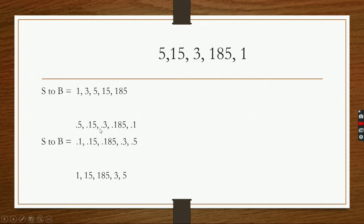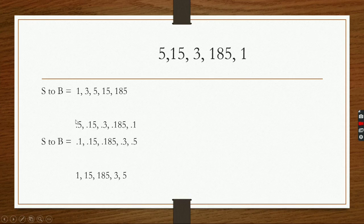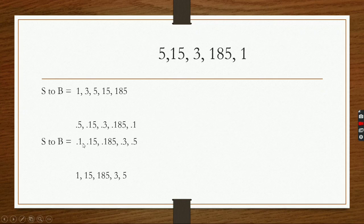Now, if we want to arrange them according to smallest to biggest, the arrangement will be: at first point 1 will come, because it is the smallest among all these numbers. After that point 15 will come, because we know that point 3 is bigger than point 15. After that point 185 will come. After that point 3 will come. After that point 5 will come.